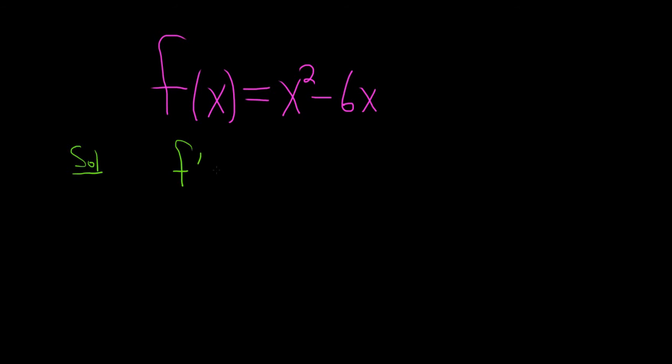So f prime of x is equal to, so the derivative of x squared is simply 2x. Using the power rule, you bring down the 2 and subtract 1. And the derivative of negative 6x is negative 6.